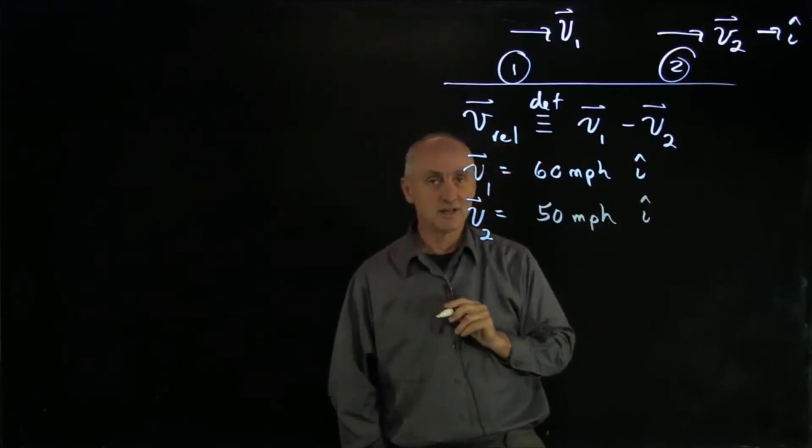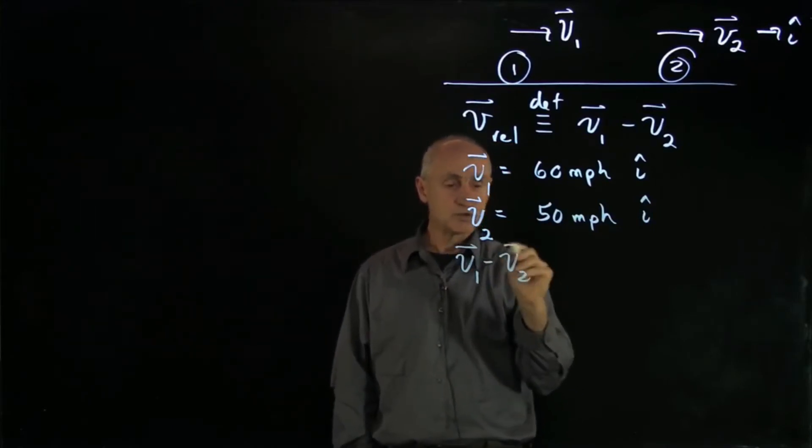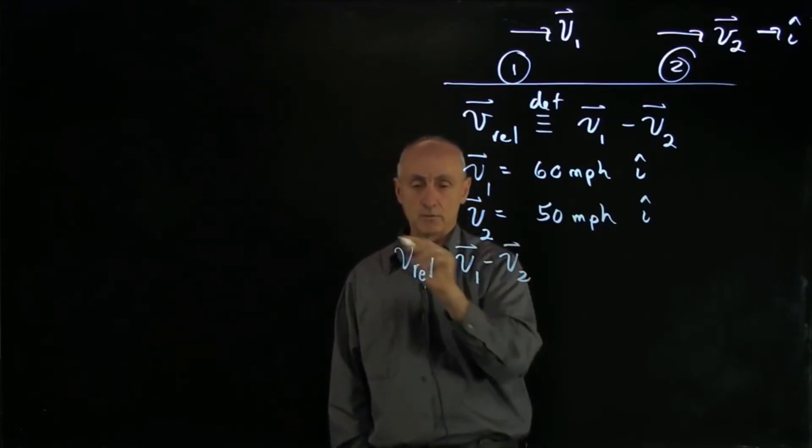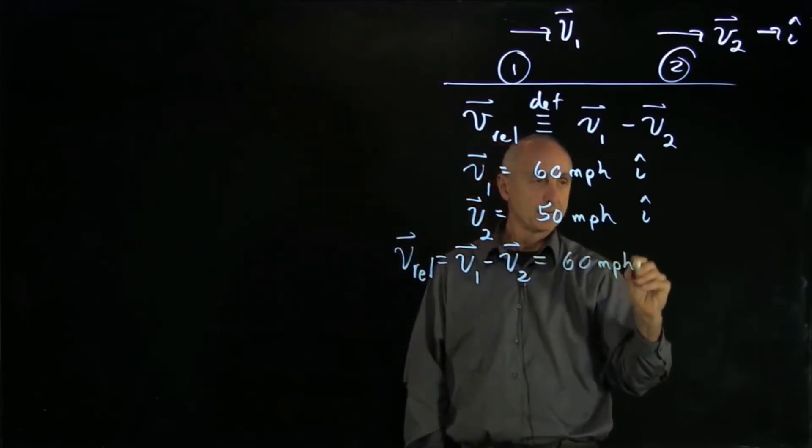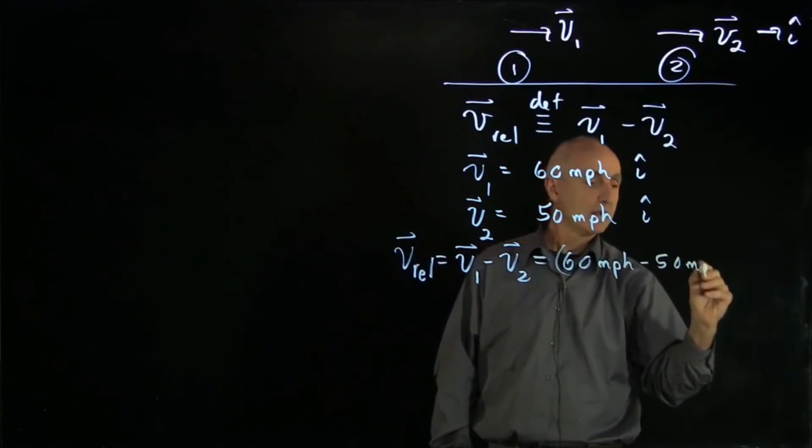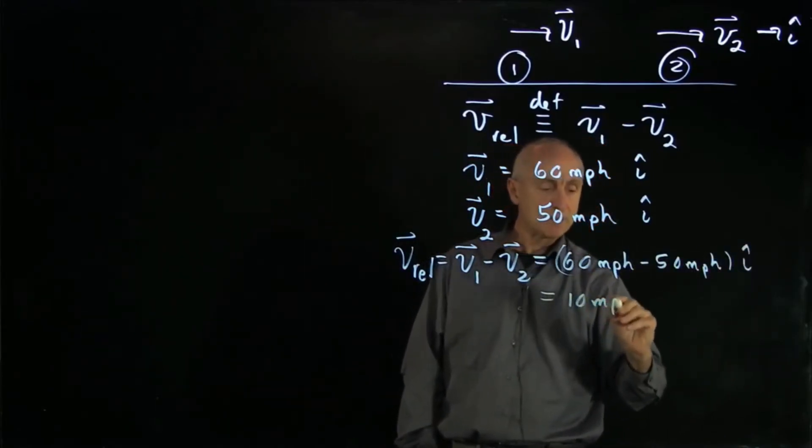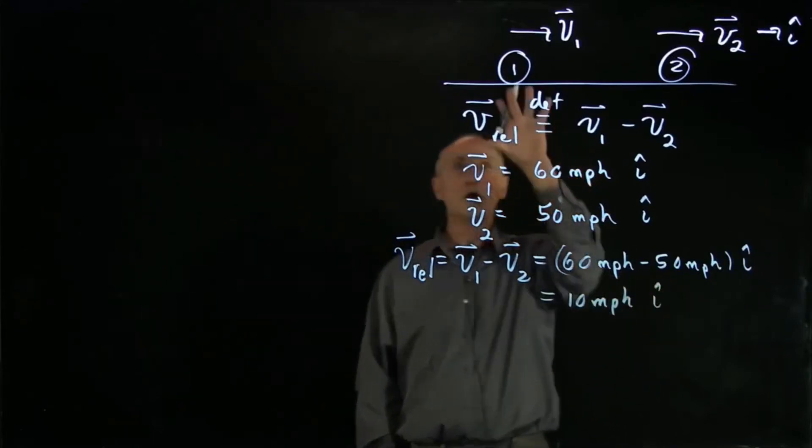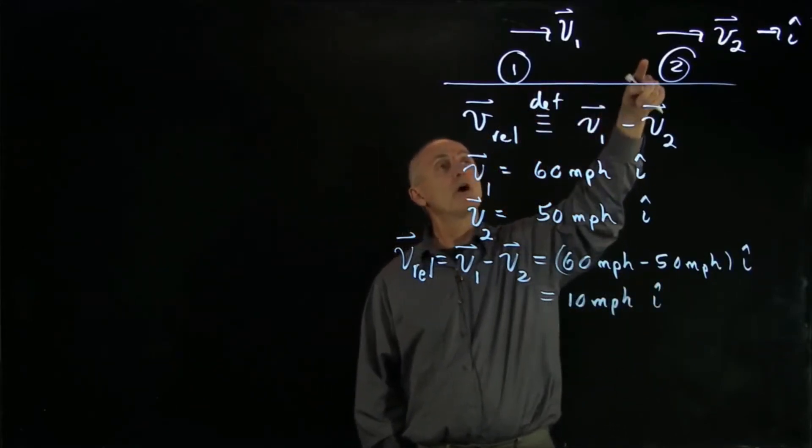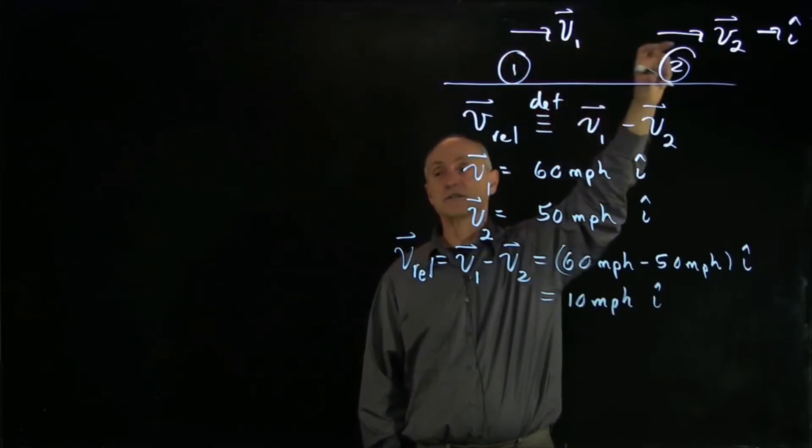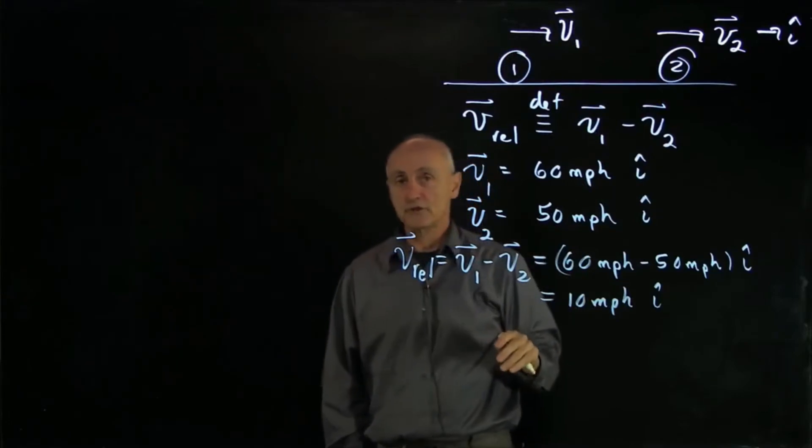Very slow. And the relative velocity, v1 minus v2, so that's what we're calling v-relative, that's 60 miles per hour minus 50 miles per hour i-hat. And that's just 10 miles per hour. And that's what people experience when one car is approaching another car. If you're in car 2, car 1 seems like it's coming at you at 10 miles per hour. This is what we mean by relative velocity.